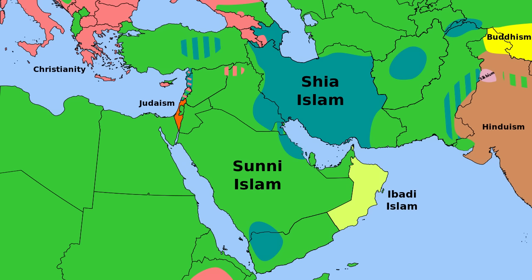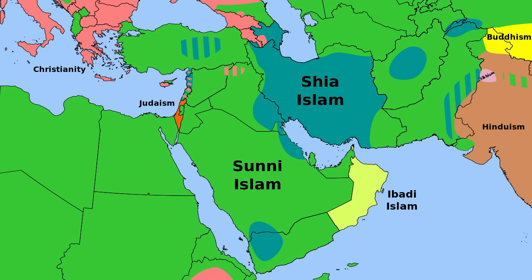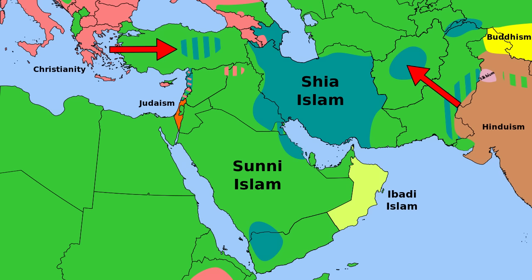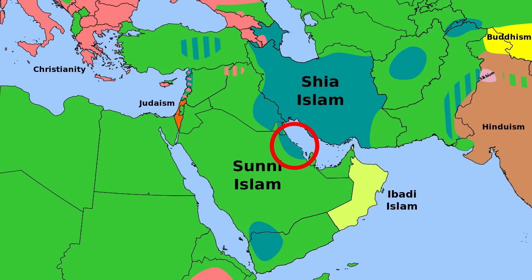Islam is divided into two main groups: Sunni and Shia. The majority of Muslims worldwide are Sunni, but Shia Muslims are concentrated in the Middle East. It is common for Sunni and Shia Muslims to live in the same country, but in general, Iran, Azerbaijan, and the south of Iraq are Shia, while the north of Iraq is Sunni. Shia Muslims are also concentrated in the interior of Turkey and Afghanistan, and the coastal region of Syria and Lebanon. The people of the island of Bahrain and the nearby Saudi coast are Shia, but the royal family of Bahrain, and therefore the politically powerful class, is Sunni.